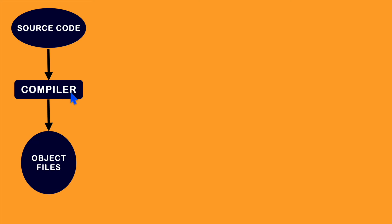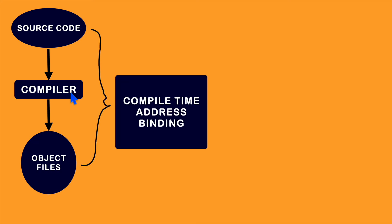it will map those instructions or data directly to the physical memory. This kind of address binding is called compile-time address binding, which is done at compile time.